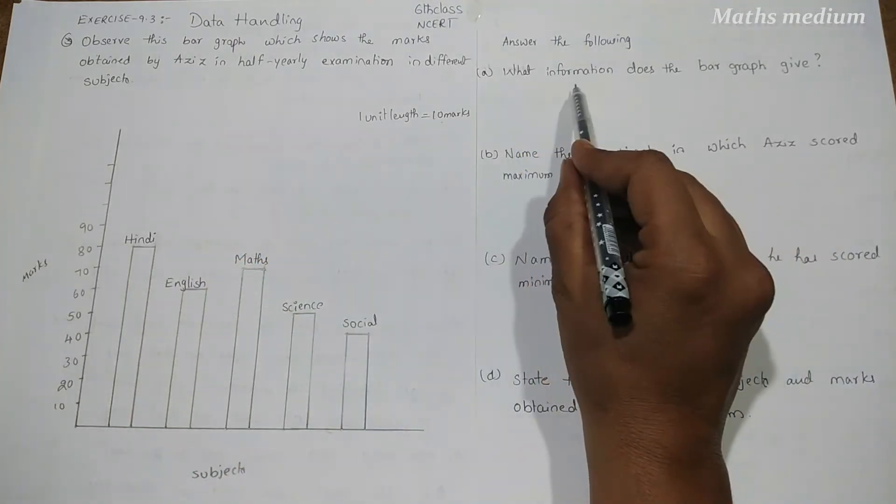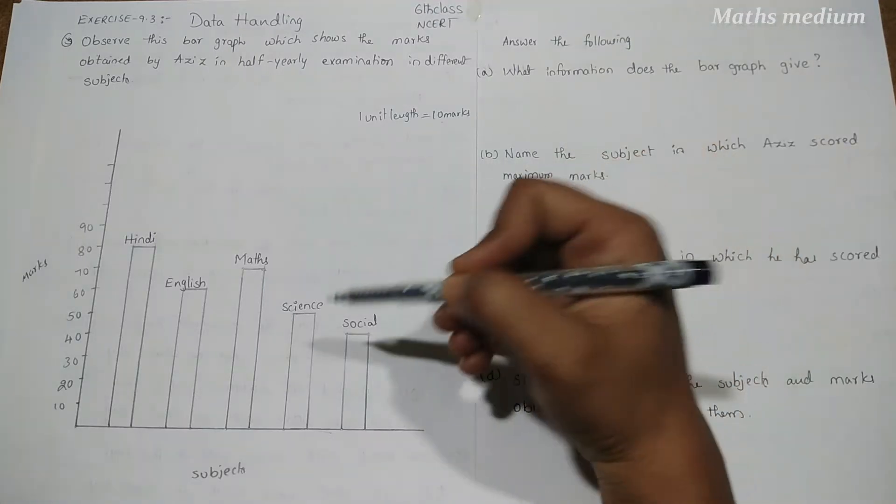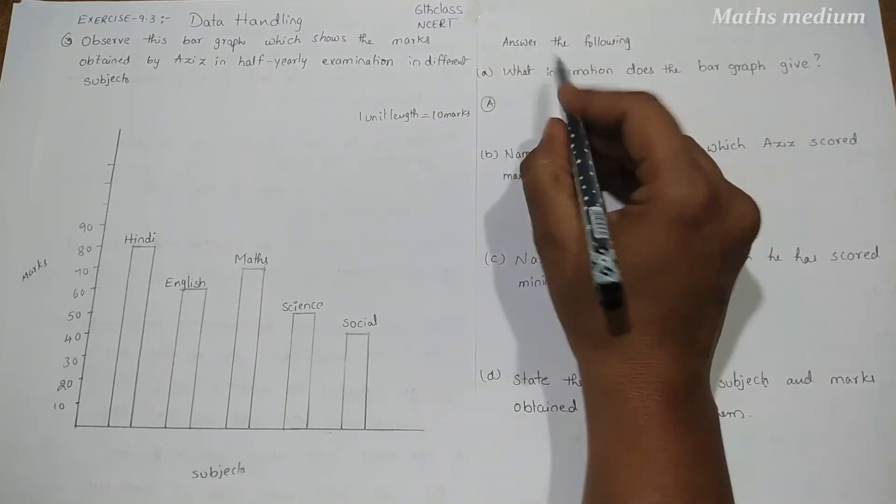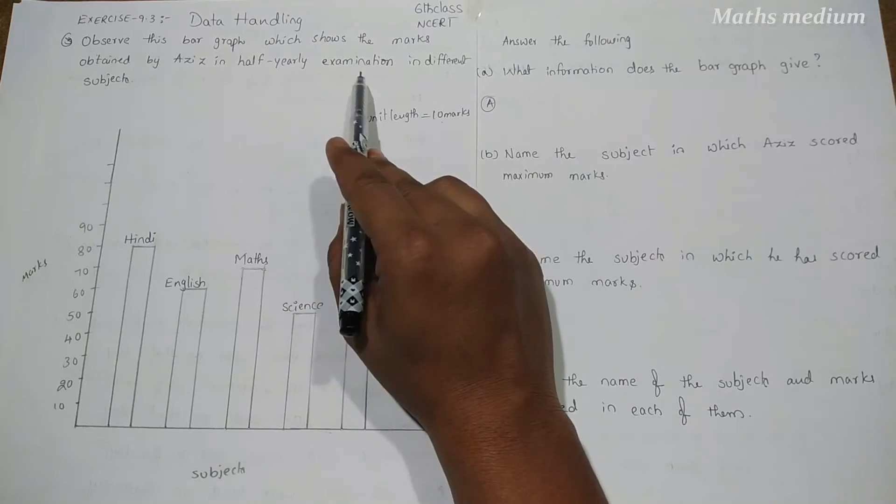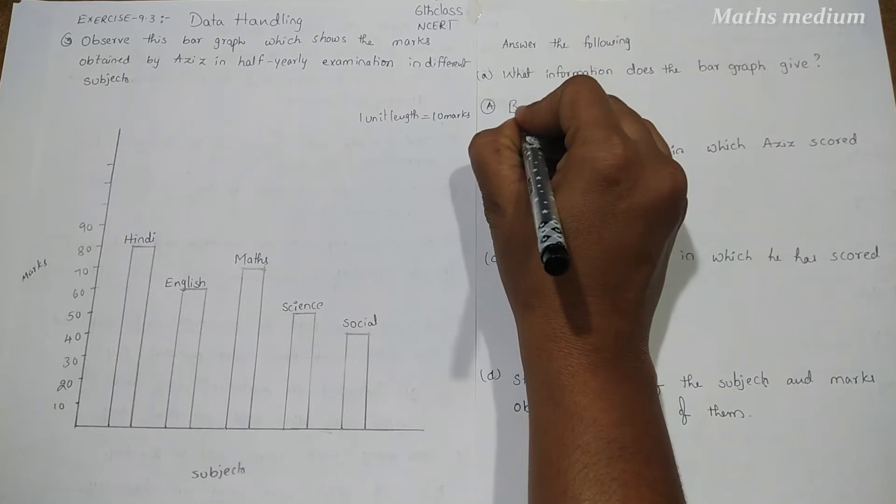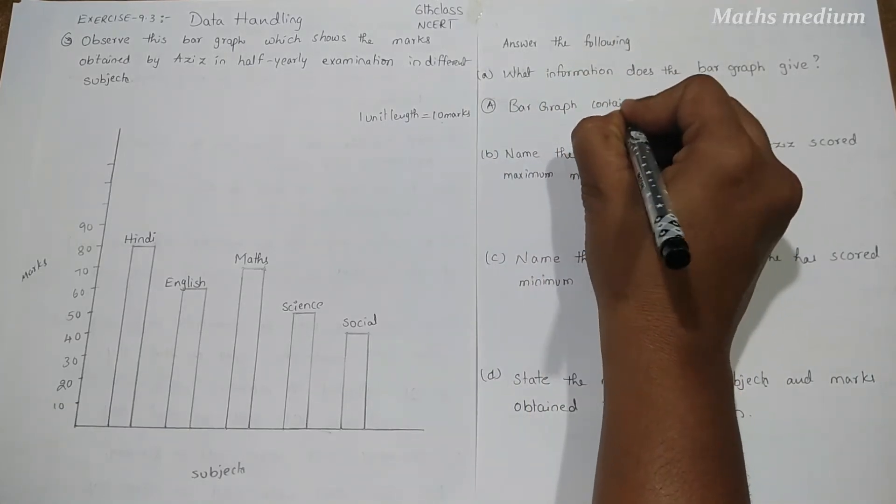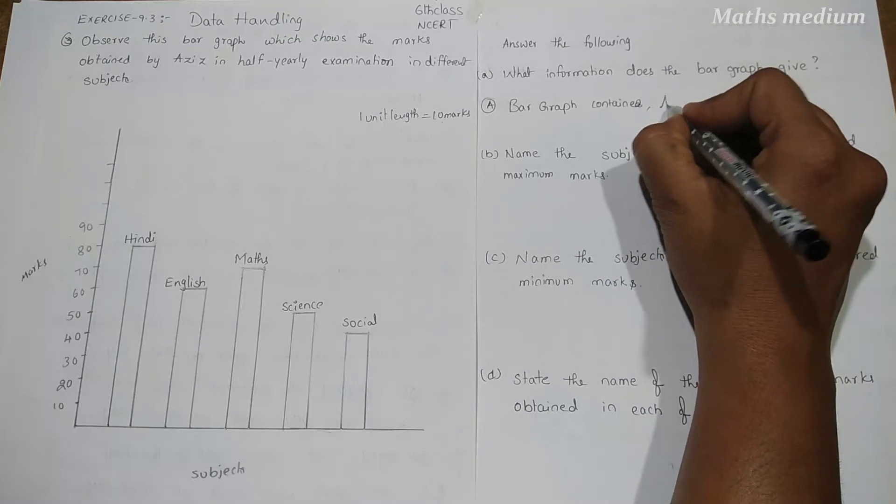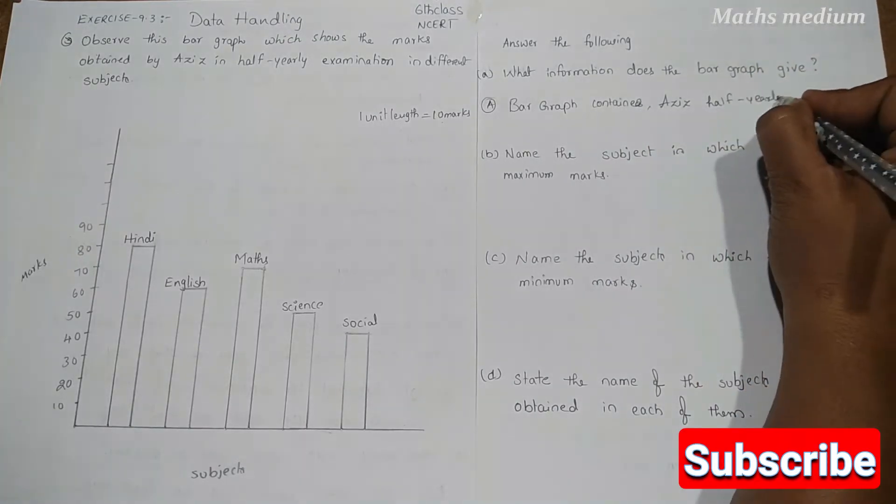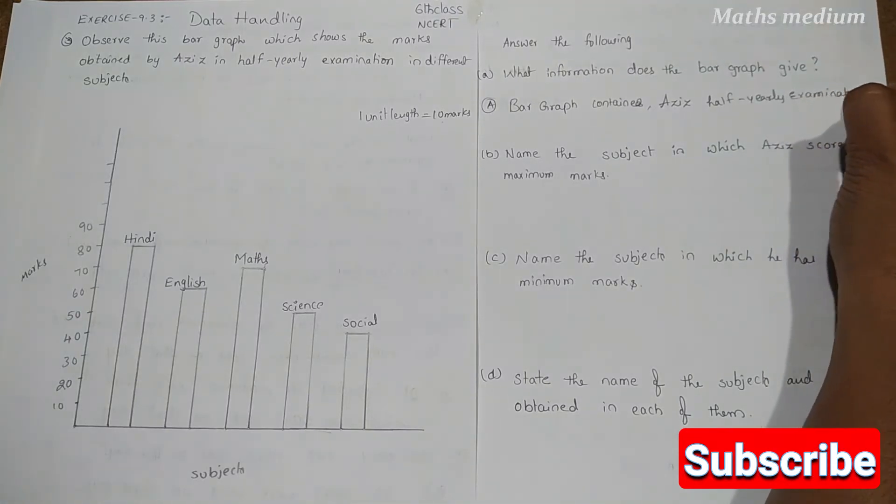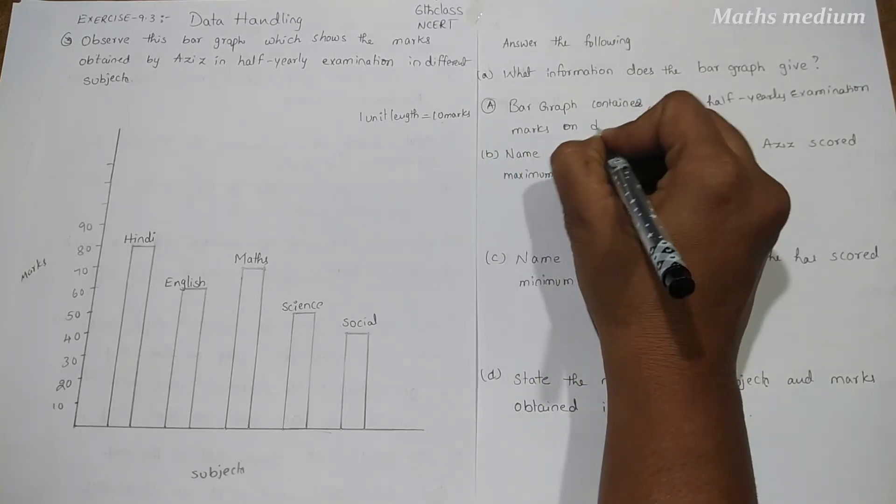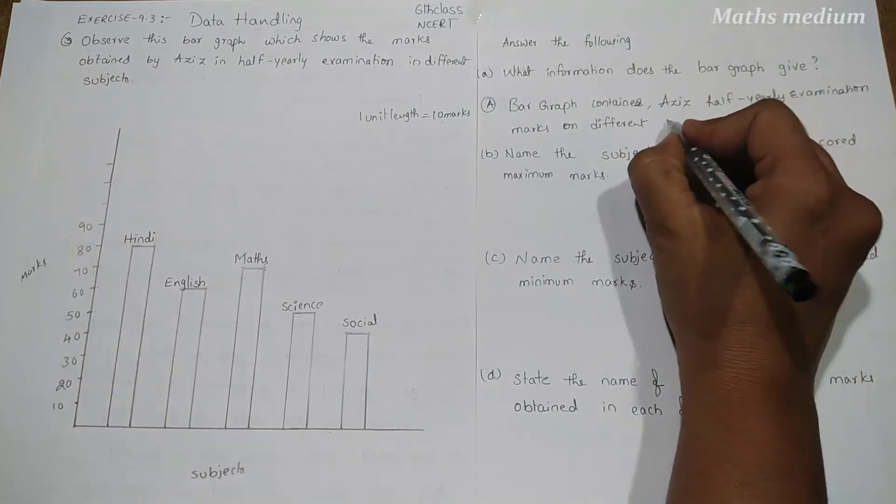Next, what information does the bar graph give? From this bar graph, what information we got? Here, the information is Aziz half yearly examination marks in different subjects. The bar graph contains Aziz half yearly examination marks on different subjects.